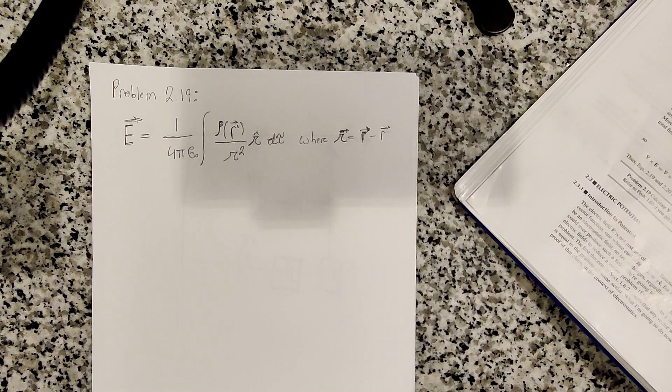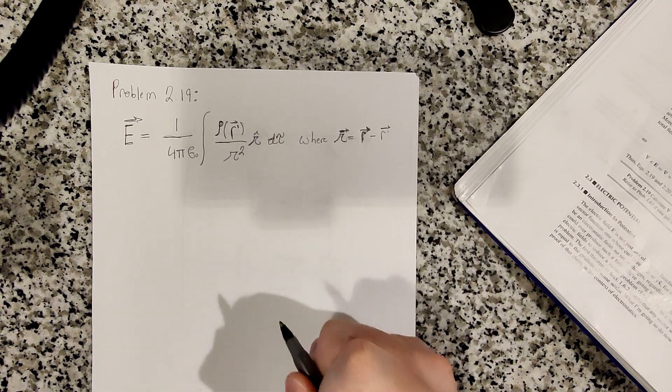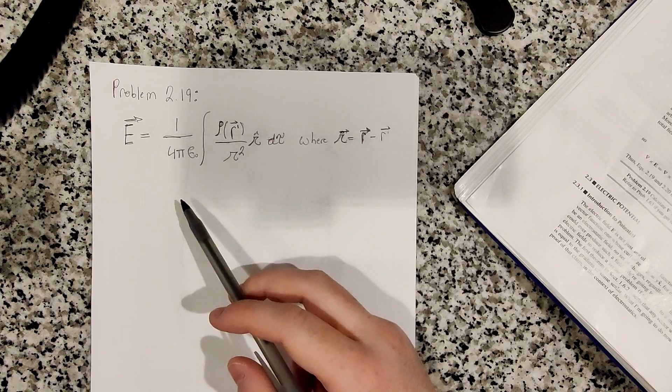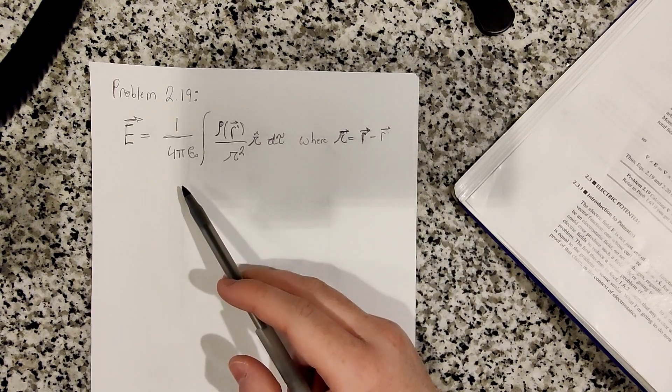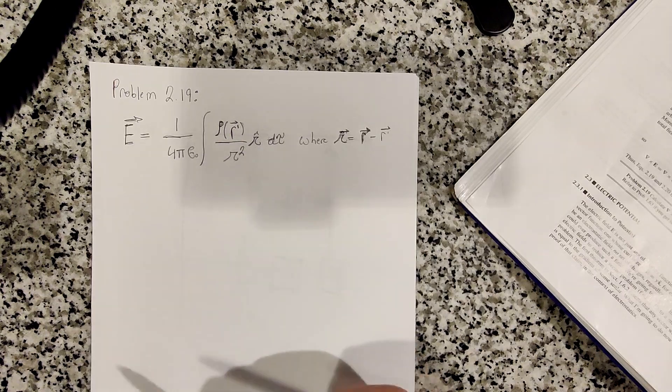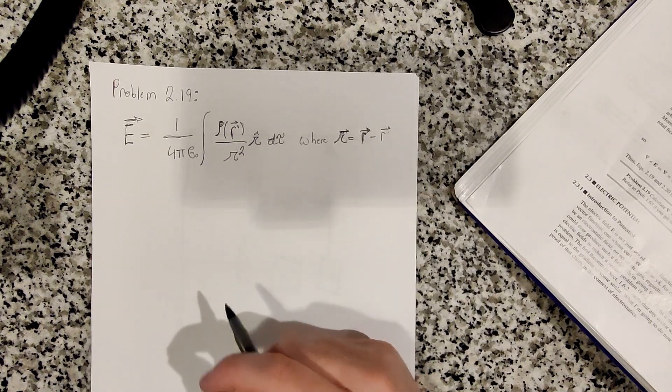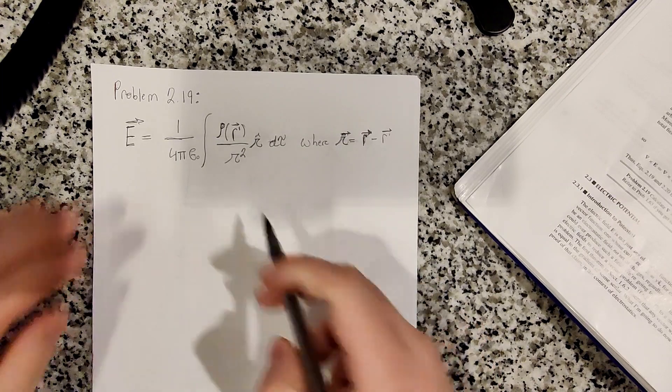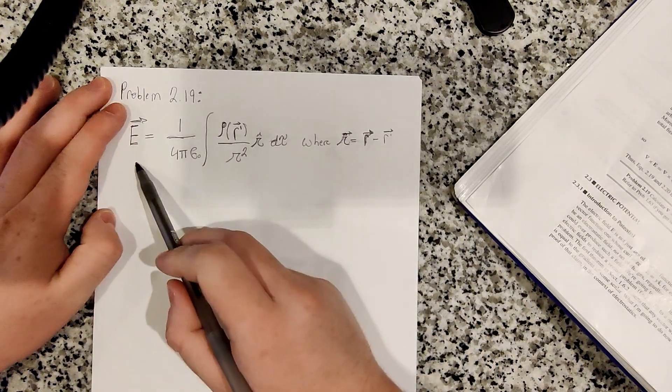So it's to calculate the curl of the electric field directly from equation 2.8 by the method of section 2.2.2. All right, so equation 2.8 I have written down here.